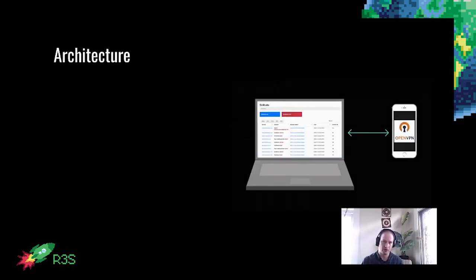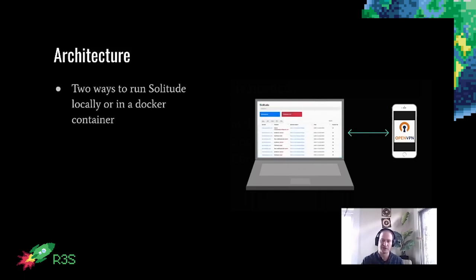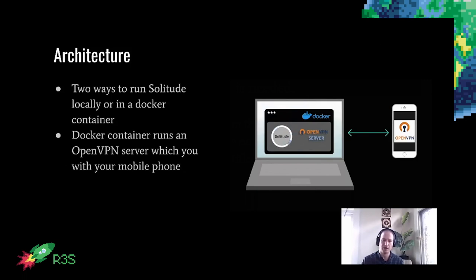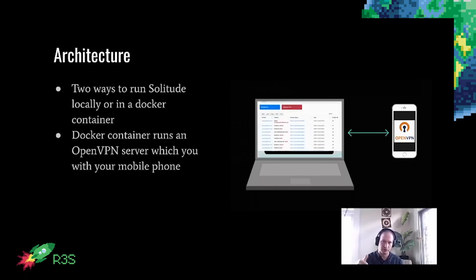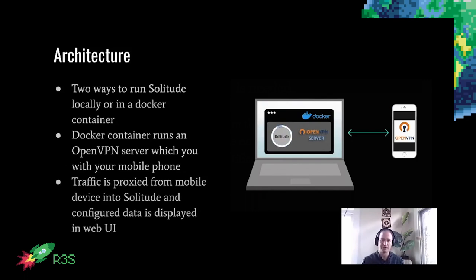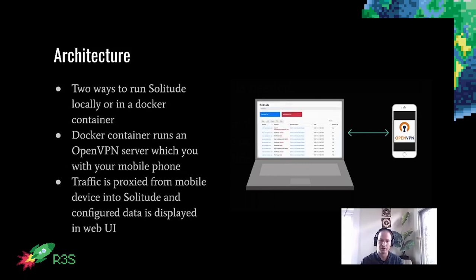The graphic on the right displays the architecture of Solitude. You can run it in two ways: either just on your laptop locally, or in a Docker container on your laptop. The idea — and thanks to Sid for his scripts that helped build this — is you run a Docker container which runs an OpenVPN server along with Solitude. You connect your mobile device to the Docker container, and all your traffic goes through the container via the VPN and into Solitude, then into the user interface where you can view all of this data. This is an easier way to proxy traffic from mobile devices.